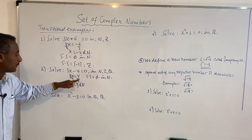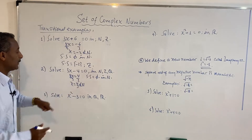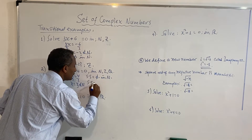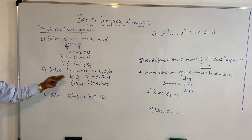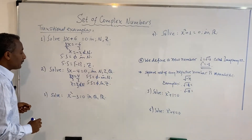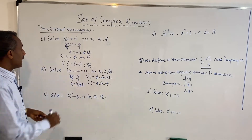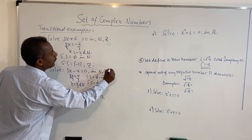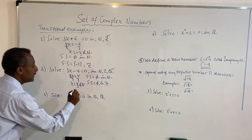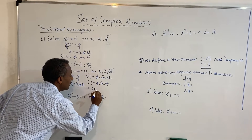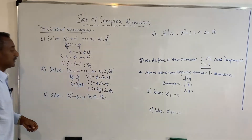This is not an element of the natural numbers, and also not in Z (integers). In the state of rational numbers, x equals 4 over 3. The solution set is {4/3}, which is an element of Q, the set of rational numbers.